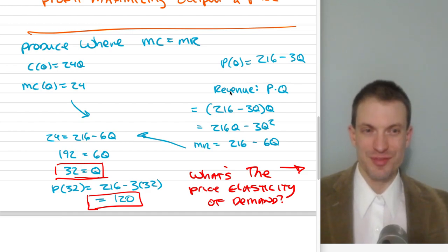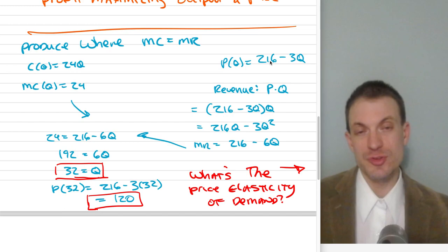And if you remember, if we have a linear demand curve, we do, then marginal revenue is going to have the same intercept, but twice the slope. So I know just staring at this, my marginal revenue has to be 216 minus 6Q.